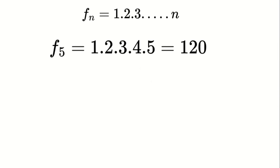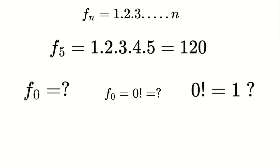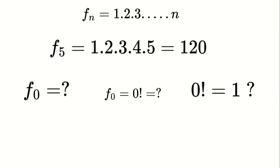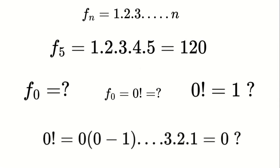Now let's consider the factorial of 0. Most of you know that the factorial of 0 is 1, but why is that? If we substitute 0 into the traditional formula for factorials, it seems we would get 0. Why then is it defined as 1?